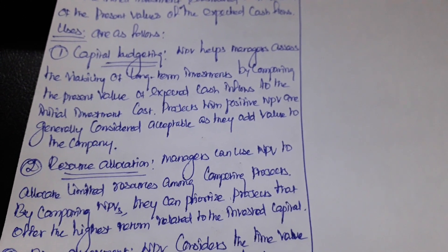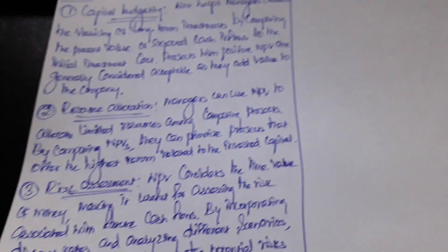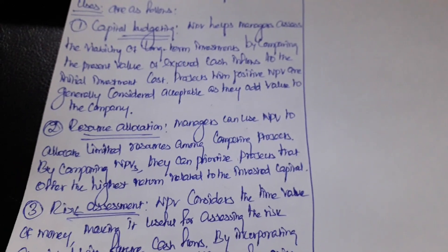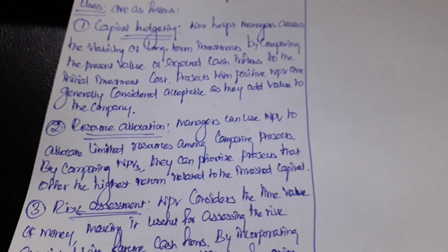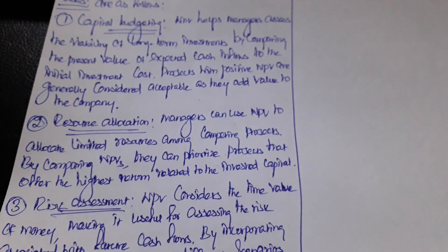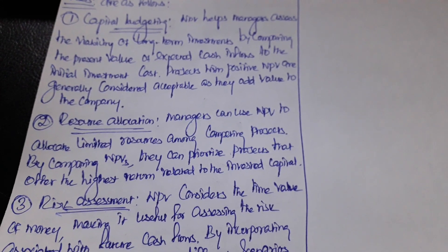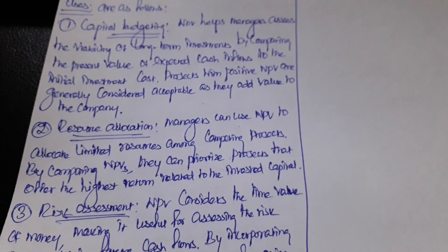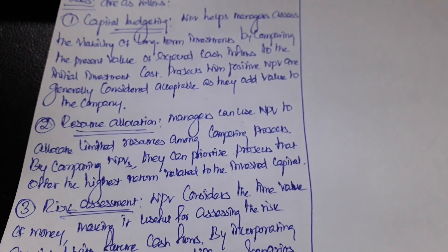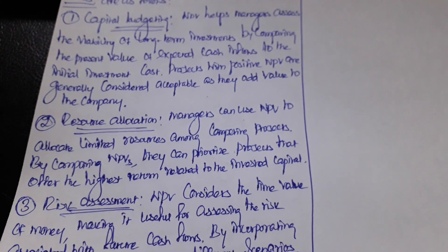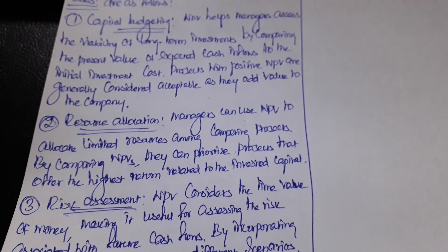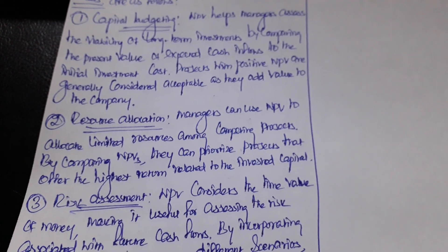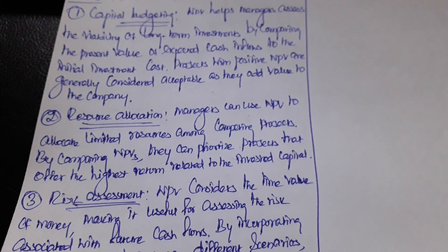The second use is resource allocation. Managers can use NPV to allocate limited resources among competing projects. By comparing NPVs, they can prioritize projects that offer the highest return relative to the invested capital.